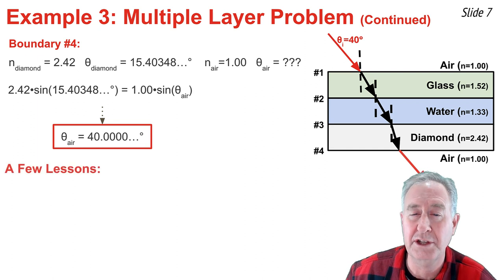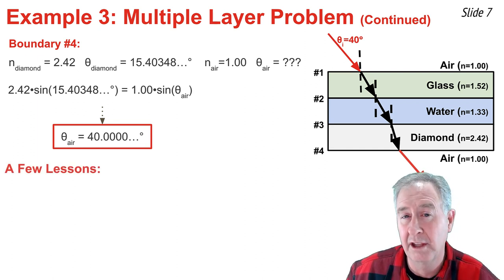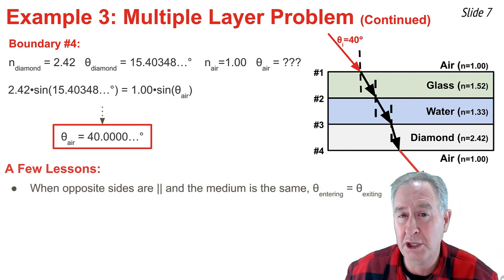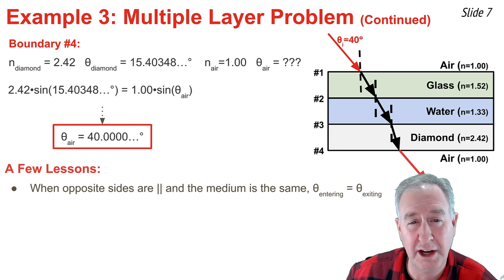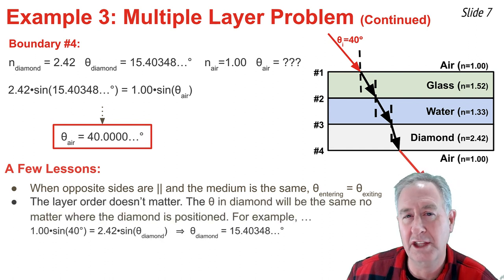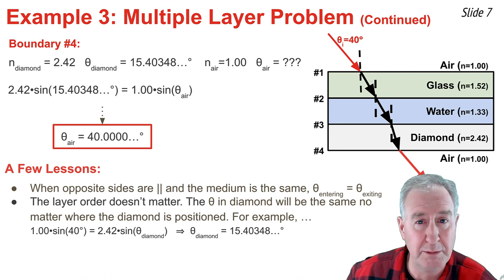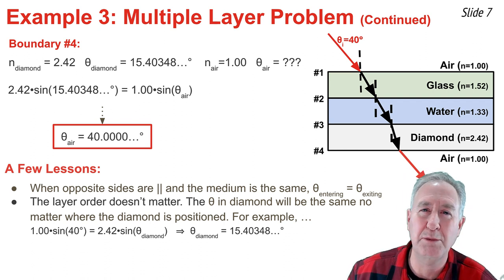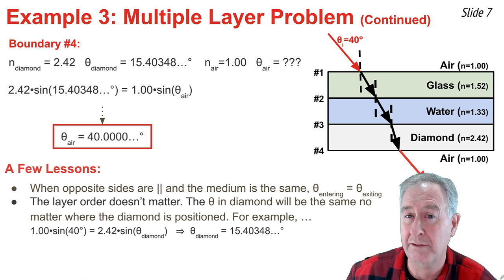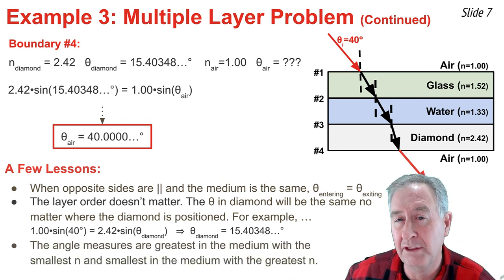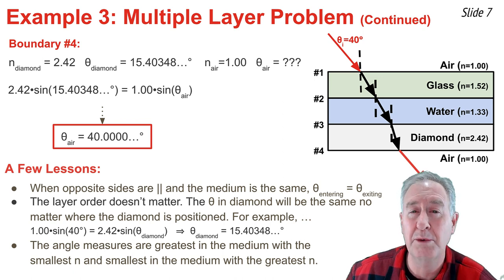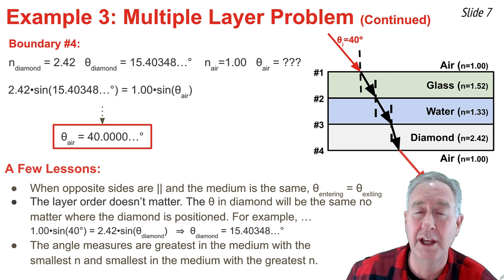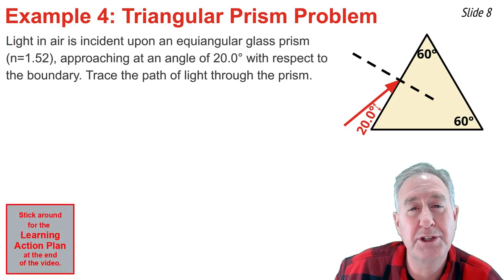Three observations to make: First, with parallel layers and the same material on top and bottom, the entry angle equals the exit angle — we started at 40 degrees in air and exit at 40 degrees in air. Second, the layer order doesn't affect the angle inside each material; for example, placing diamond first still yields 15.4 degrees inside diamond. Third, angles are greatest in the material with the smallest n value and smallest in the material with the largest n value — air had the largest angle, and diamond had the smallest.